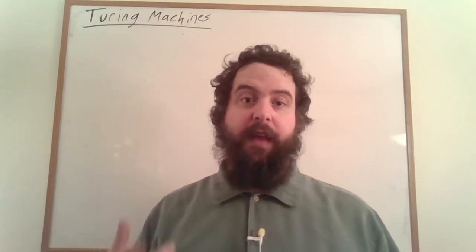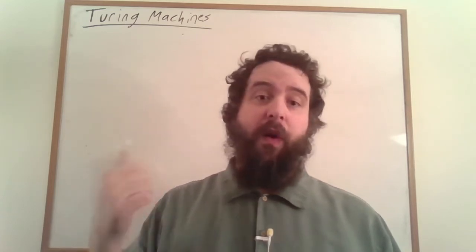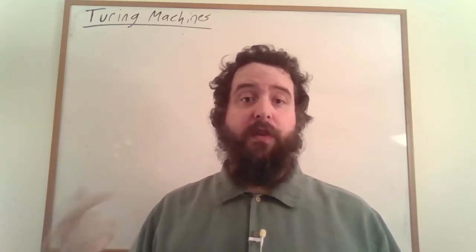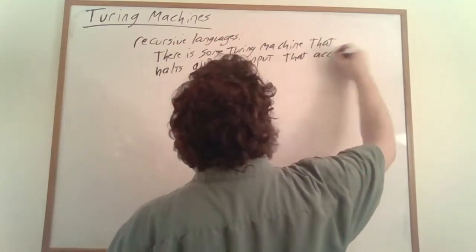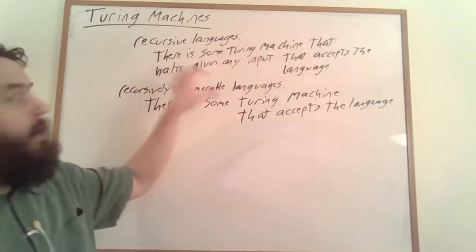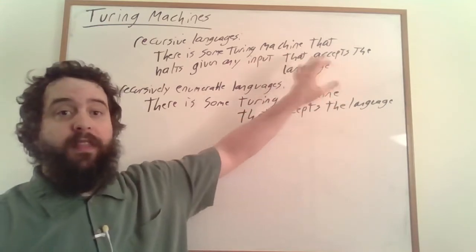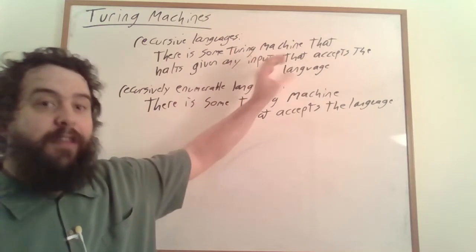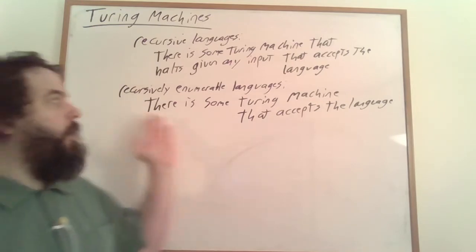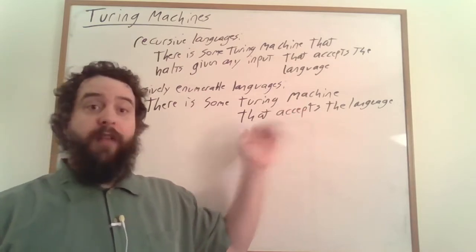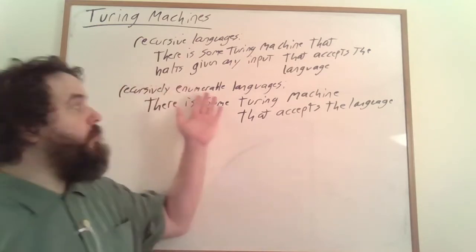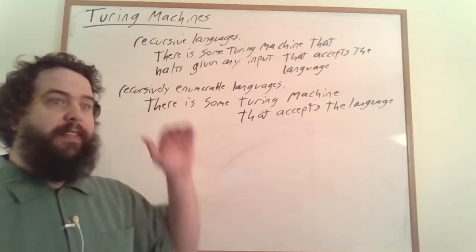There are actually three things a Turing machine can do given a particular word as input: it can halt and accept, halt and reject, or never get around to halting at all. There are actually two different classes of languages defined in terms of Turing machines. There are the recursive languages, where there's some Turing machine that always halts given any particular input and accepts exactly the words in the language — this sort of Turing machine will always tell you yes or no. On the other hand, you have recursively enumerable languages, where we only require that there's some Turing machine that accepts all of the words of the language.